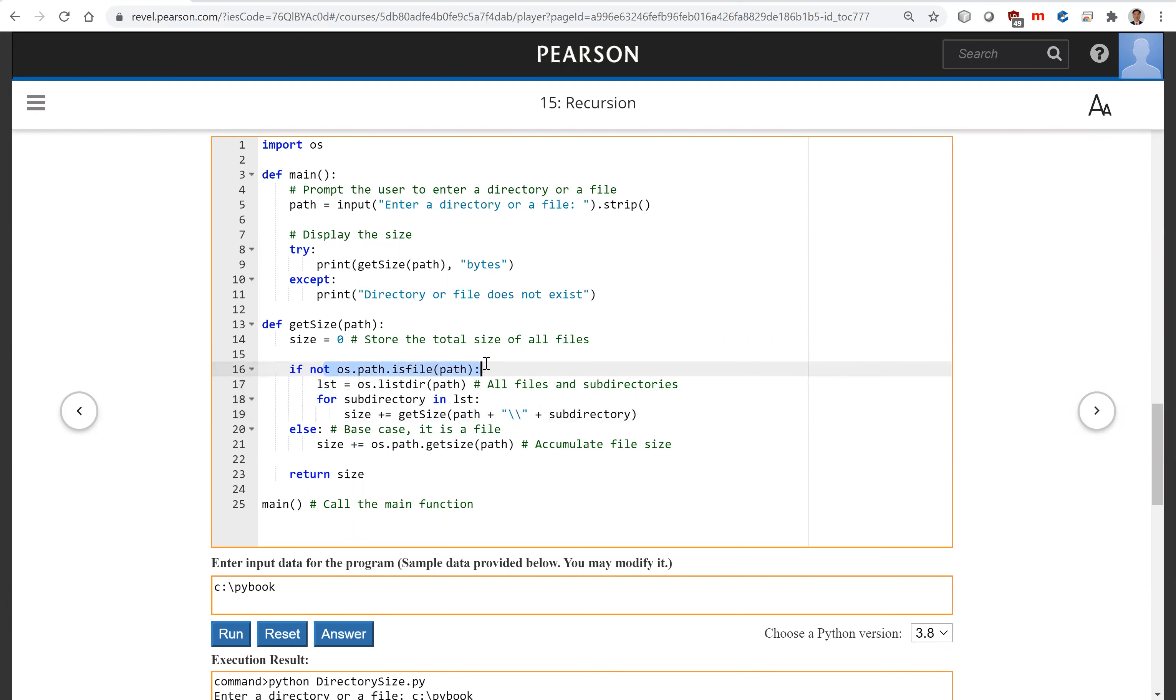Now, if this path is a file, we can simply get the size using this. This is the base case for the recursion here. Once we know this item is a file, we're going to get the size and add it to the total size.